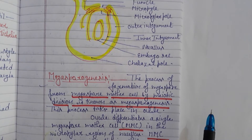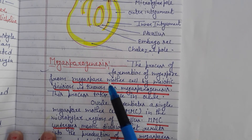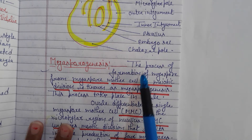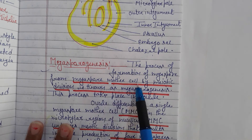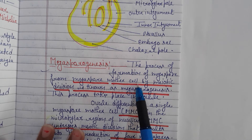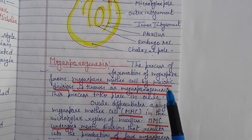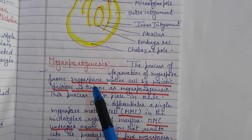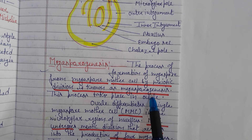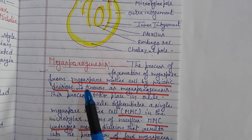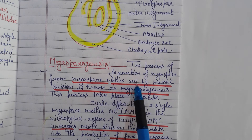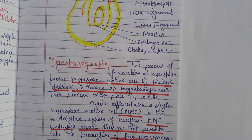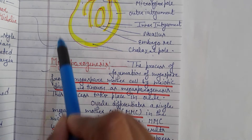Now let's talk about megasporogenesis — mega means ovule, genesis means formation or synthesis. Megasporogenesis is the process of formation of megaspores from the megaspore mother cell (MMC). The MMC is 2N diploid, and it undergoes meiotic division — a reductional division. This process takes place in the ovule. The ovule differentiates a single megaspore mother cell.